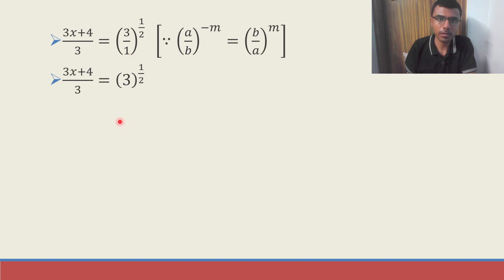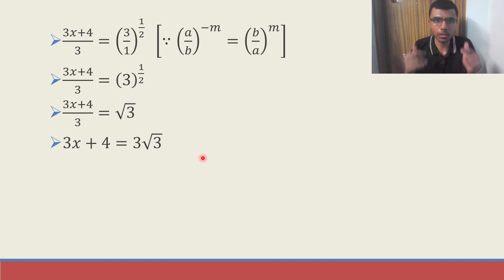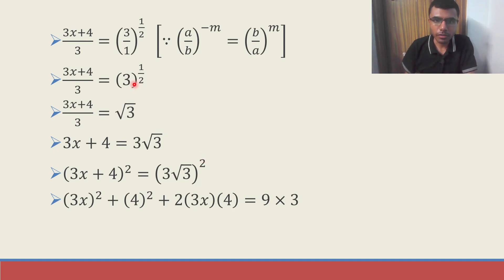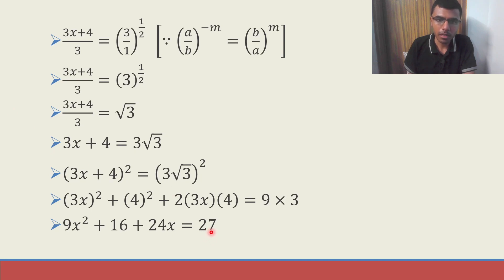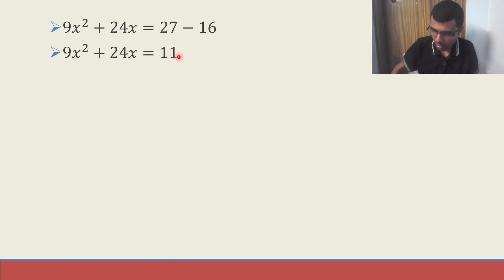3/1 is nothing but 3, so (3x + 4)/3 = 3^(1/2) = √3. Sending the 3 over, 3x + 4 = 3√3. Now in the question they asked to show 9x² + 24x = 11. Expanding (3x + 4)² = 9x² + 16 + 24x = (3√3)² = 27. Sending the 16 to the other side: 9x² + 24x = 27 − 16 = 11. That's it.